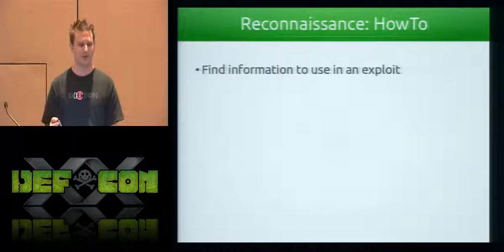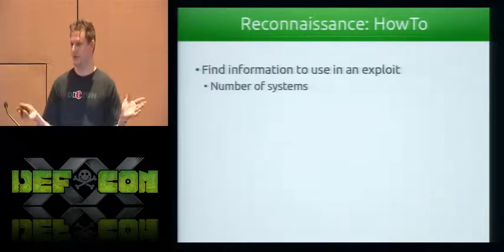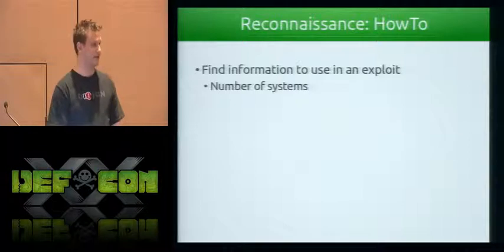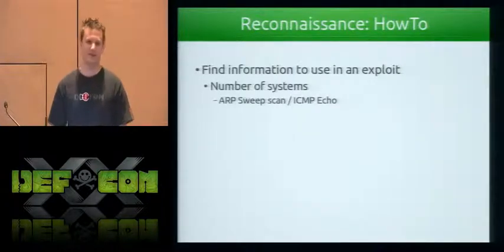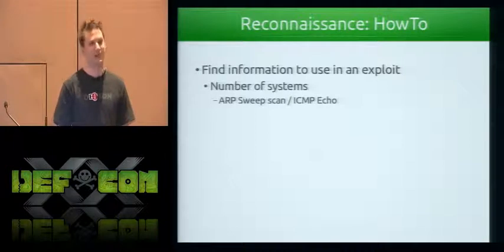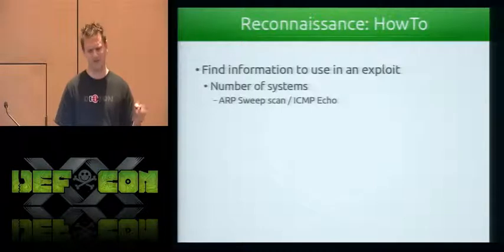So how does this actually get performed? One of the first things you want to do once you gain access to a network is find out the number of systems on the network — what machines exist. One of the major ways to do that is ARP sweep scans. You send out an ARP packet and say, "hey, 192.168.1.10, what's your MAC address?" If he answers, he exists; if he doesn't, maybe he doesn't exist or is on a different segment.